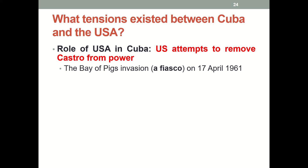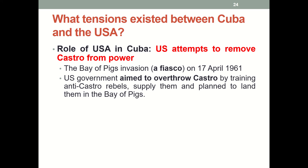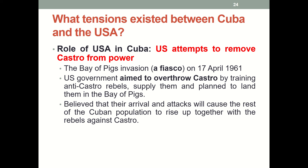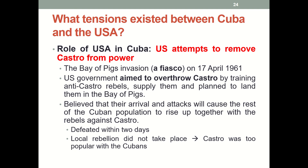The first example is the Bay of Pigs invasion on 17 April 1961, which was a huge embarrassment and fiasco. The US government wanted to overthrow Castro by training anti-Castro rebels, supplying them with knowledge and military equipment, and landing them at the Bay of Pigs. The US government believed their arrival and attacks would cause the Cuban population to rise up together with the rebels against Castro. Unfortunately, the whole operation was defeated within two days, the expected local rebellion didn't take place because Castro was popular with the Cubans, and it was a humiliating attempt for the United States.